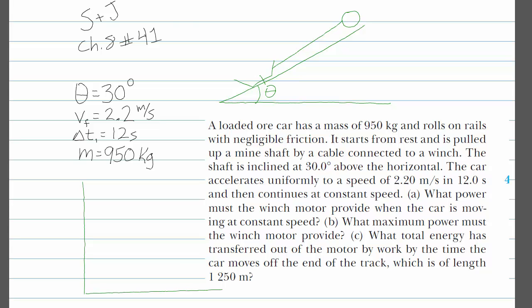The ore cart starts at rest, and then the velocity increases. It accelerates uniformly, so the velocity increases linearly as a function of time until 12 seconds, at which point the cart moves at constant velocity from there on out.